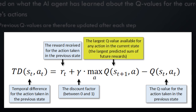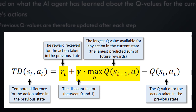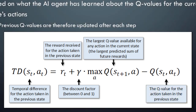The next element of our equation is simply the maximum Q value that is currently available for any action in our current state. Recall that we're calculating this temporal difference value to figure out by how much we should adjust the Q value for the previous action. The Q values for the current state represent our best estimate of the sum of all future rewards for each possible action. What we're trying to do is update the Q value for the previous action based on the idea that the maximum future reward for that action is the sum of the immediate reward for taking that action and the maximum future reward available for taking an action in the next state. Finally, we subtract the Q value for the AI agent's most recent action, yielding the temporal difference value.